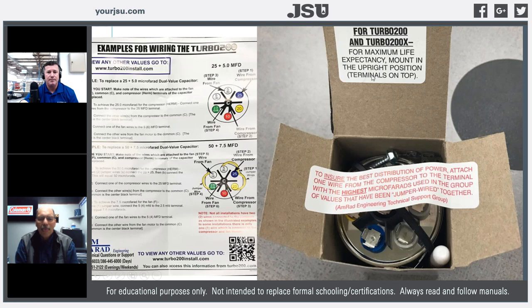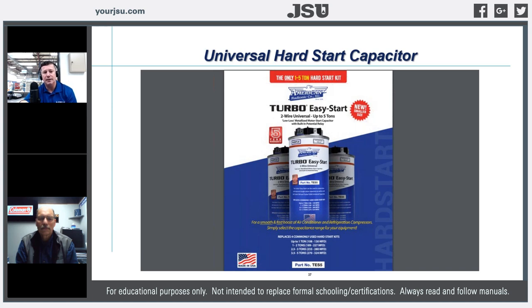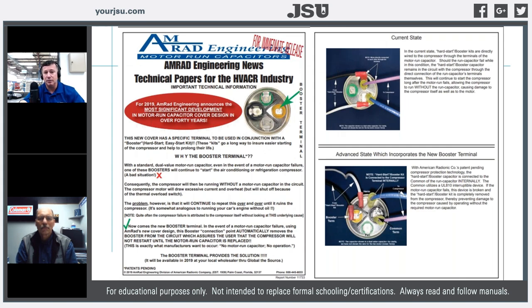There are lots of combinations you can use on that capacitor. One product I'm very excited about that Turbo is releasing is the Turbo Easy Start — a multi-purpose hard start kit usable between one and five tons. The current hard start kits depend on the tonnage of the equipment, but the Turbo Easy Start functions between one and five tons with multi-horsepower ratings depending on jumper tap placement, similar to the Turbo 200 and 200 X.